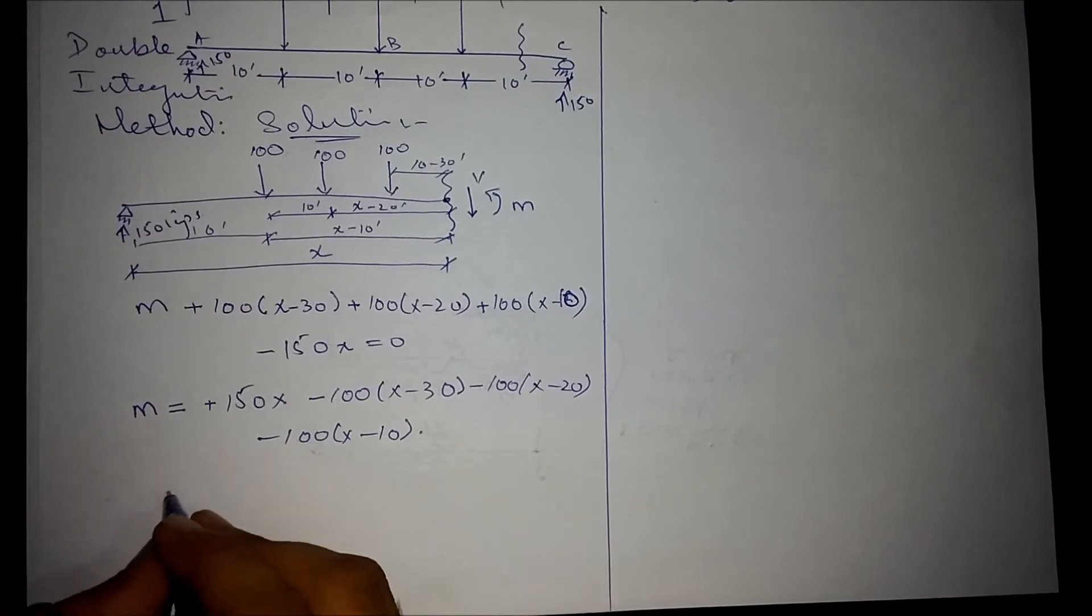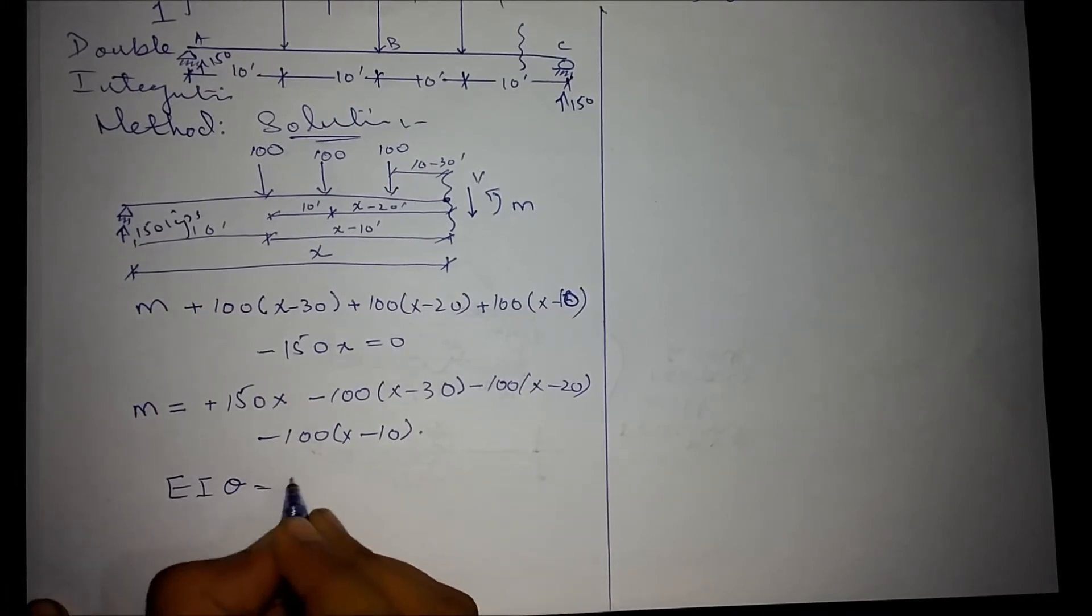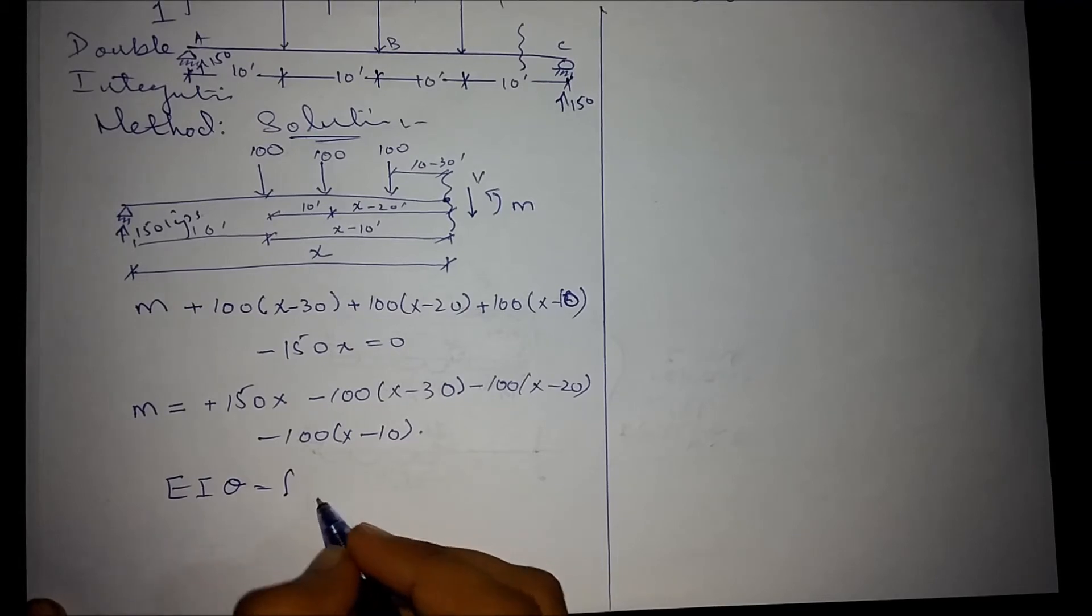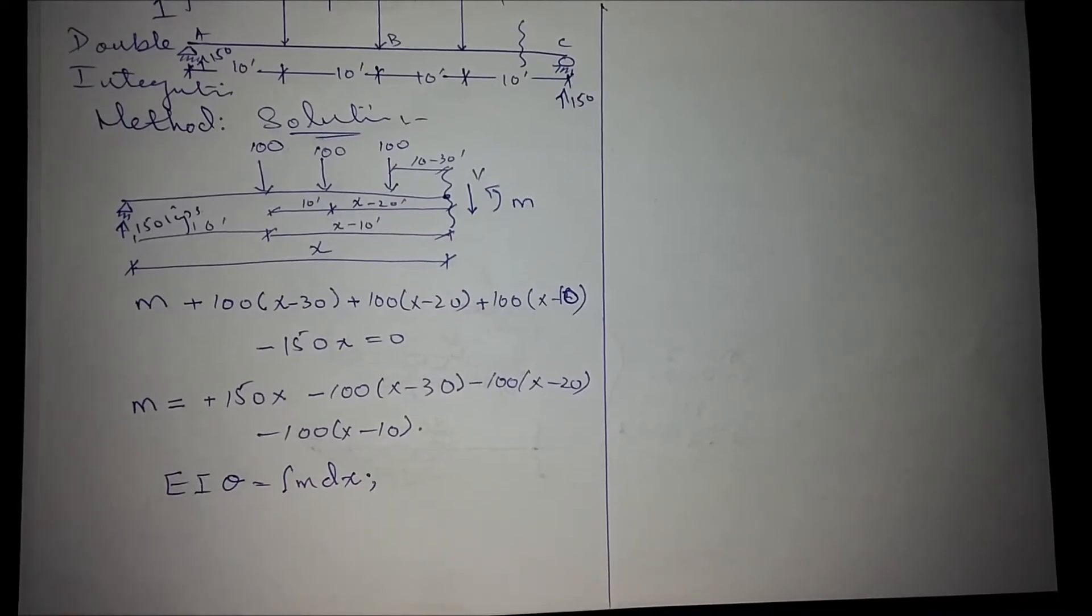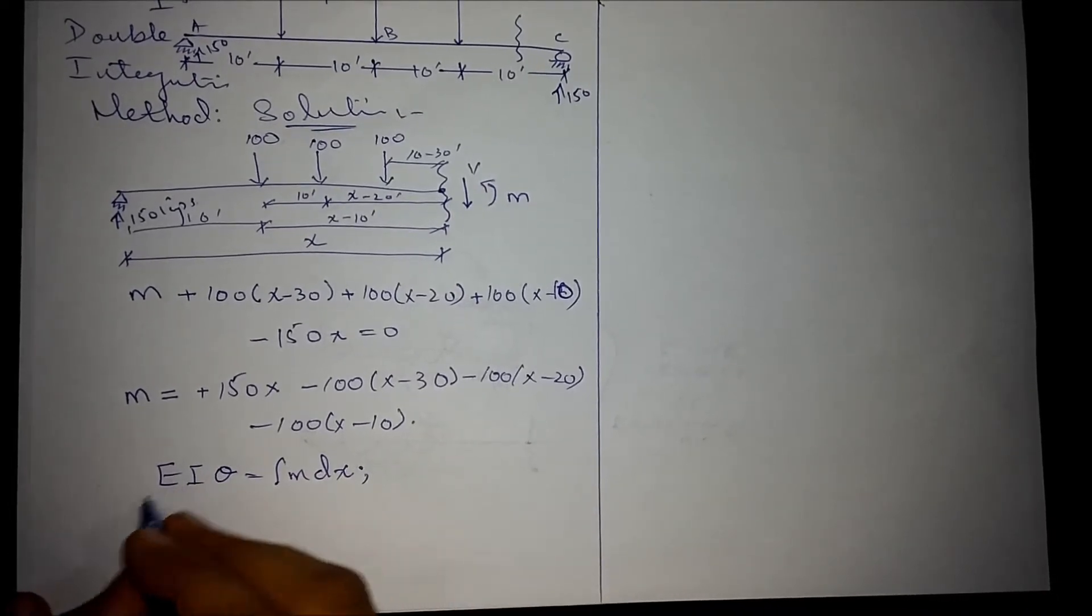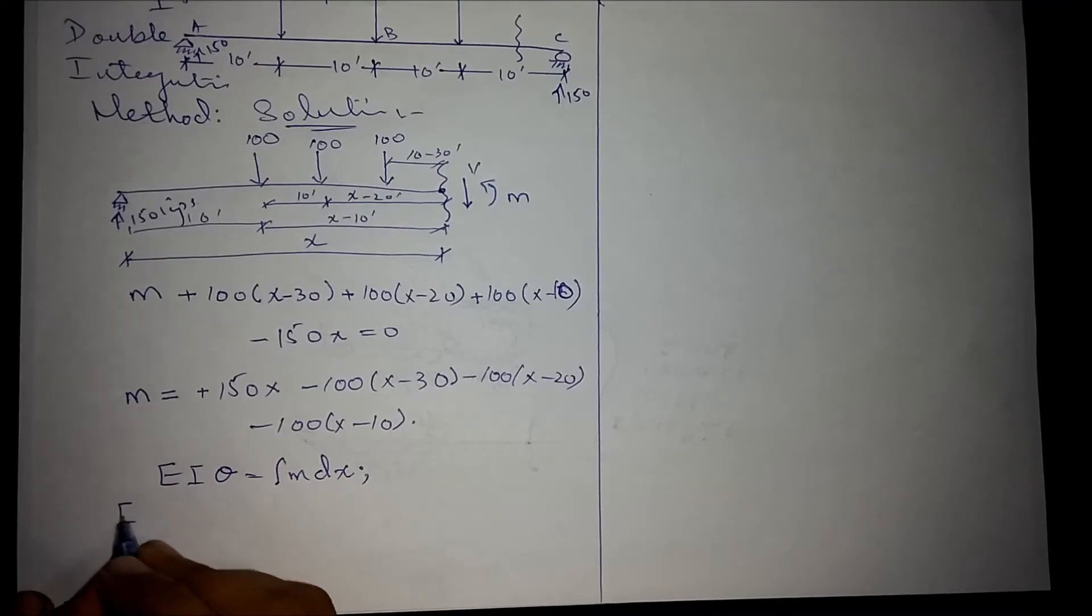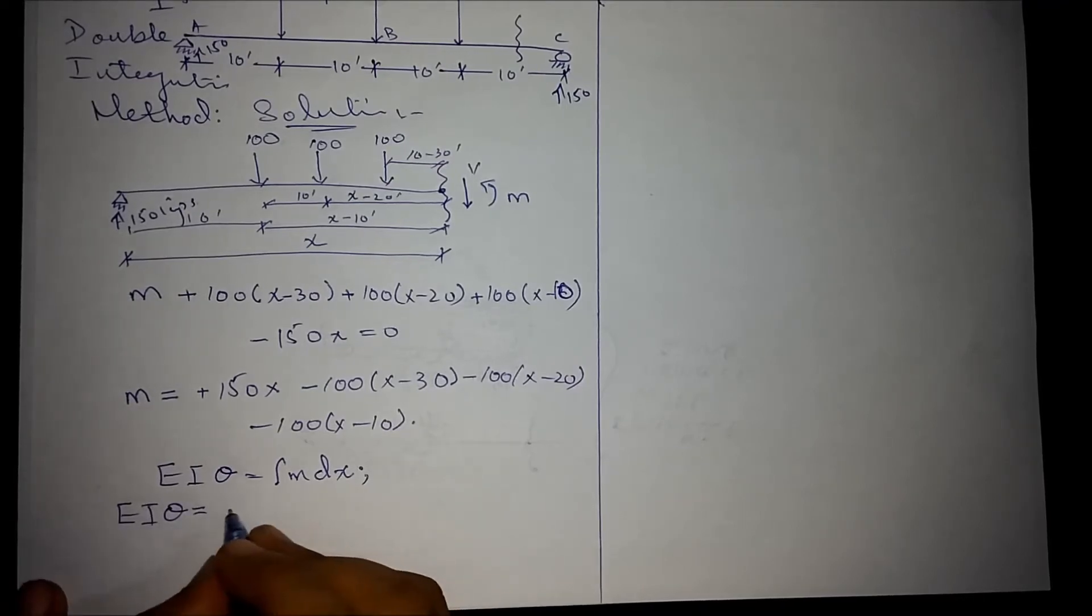We know that integral of the moment will give us the value of rotation. So integrating the above equation will give us EI theta equals to 75x squared.